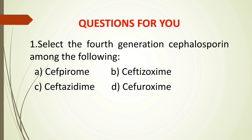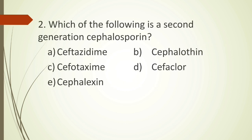Question 1: Select the fourth generation cephalosporin among the following. Option A: Cefpirome. Option B: Ceftisoxime. Option C: Ceftazidime. Option D: Cefuroxime. Question 2: Which of the following is a second generation cephalosporin? Option A: Ceftazidime. Option B: Cephalothin. Option C: Cefotaxime. Option D: Cefuroxime. Option E: Cephalexin.